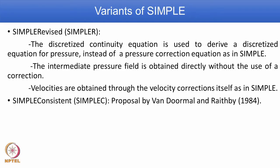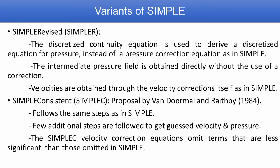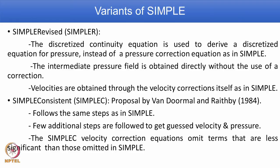Another variant is SIMPLE Consistent, or SIMPLEC in short form. This was proposed by Van Doormal and Raithby in 1984. It follows almost the same steps as SIMPLE, with a few additional steps introduced initially to get guessed velocity as well as pressure. In SIMPLEC, the velocity correction equations omit terms that are less significant than those omitted in SIMPLE. Recall that in SIMPLE, the neighboring node correction contribution — sigma a_nb u-prime_nb — is dropped. In SIMPLEC, similarly important but less significant terms are dropped.